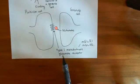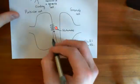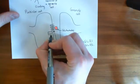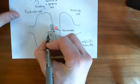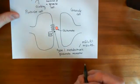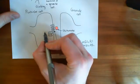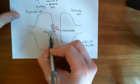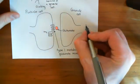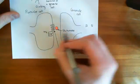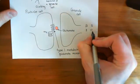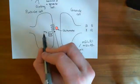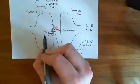This receptor is coupled to the GQ protein. The GQ protein is a heterotrimeric G protein consisting of an alpha subunit, a beta subunit, and a gamma subunit. If it's a GQ protein, it means the alpha subunit is specifically alpha-Q. There are five different options for the beta subunit and twelve different options for the gamma subunit, so there are many different GQ proteins, but the key feature is the alpha-Q subunit.